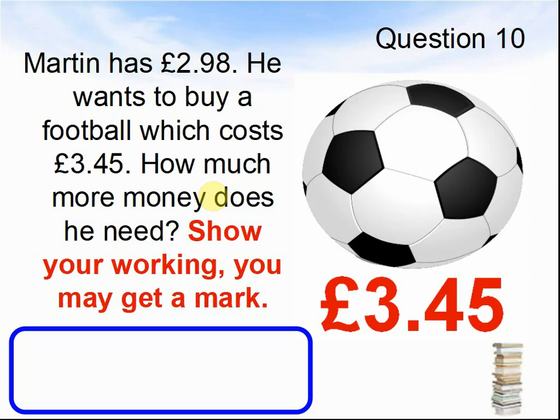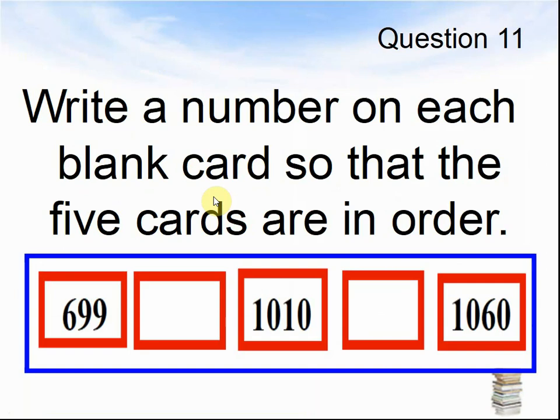Here comes question 11. Write a number on each blank card so that the five cards are in order, smallest first. 699, something, 1010, something, 1060. Pause the video until you are ready for question 12.